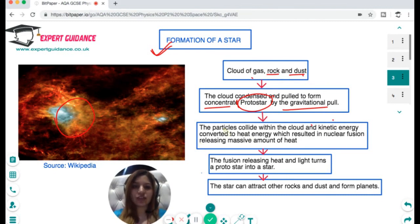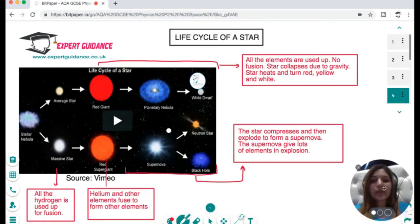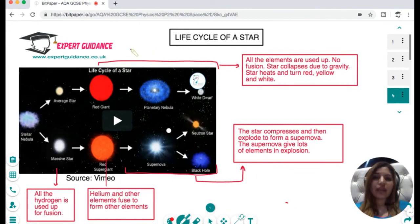This fusion released massive amounts of heat. The fusion releasing heat and light turned a protostar into a star. The star can then attract other rocks and dust and form planets. This is how a star is formed, and you should know the process of formation of the star.